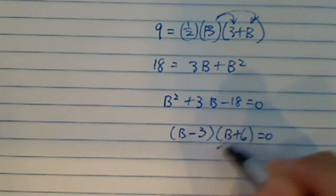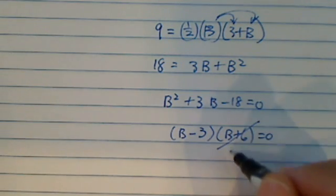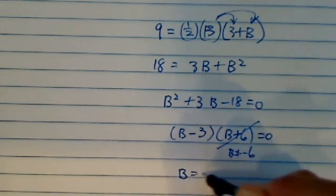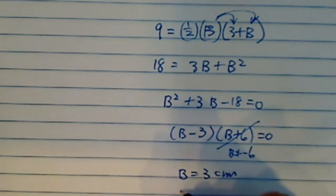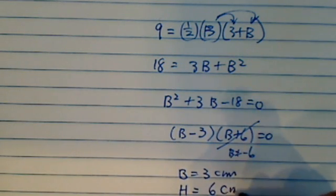Since it's a physical situation here, so b cannot be minus 6. And we have a base equal to 3 centimeters, which gives the height is equal to 6 centimeters.